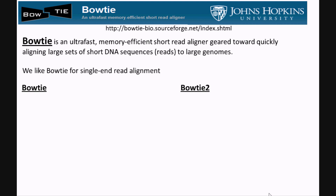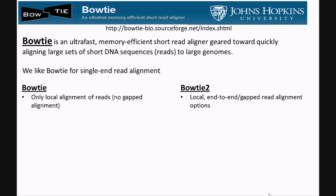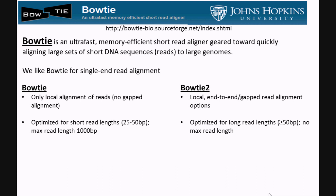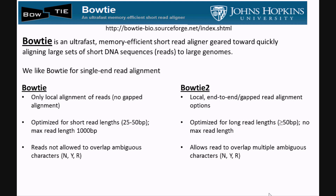Some of the key differences between Bowtie and Bowtie 2 are as follows. Bowtie can only perform local alignment of reads, while Bowtie 2 can perform both local and end-to-end or gapped read alignment. Bowtie is optimized for short read lengths with a max read length of 1,000 base pairs, while Bowtie 2 is optimized for longer read lengths of 50 base pairs or greater and has no max read length. Bowtie does not allow reads to overlap with ambiguous characters in the reference genome, while Bowtie 2 can. Bowtie can support color-space reads, while Bowtie 2 does not.